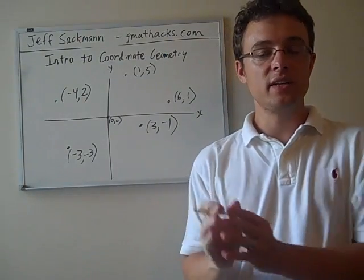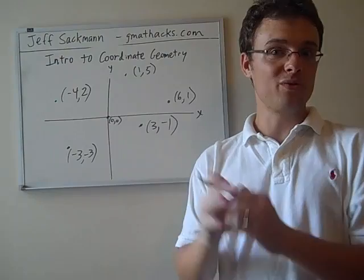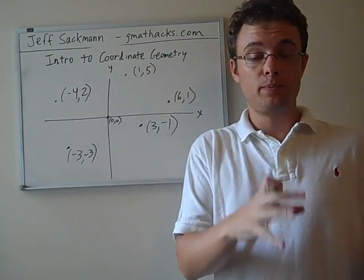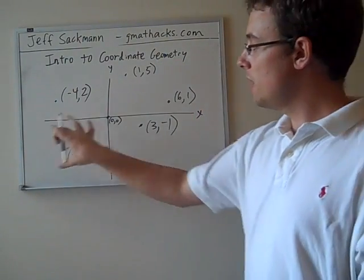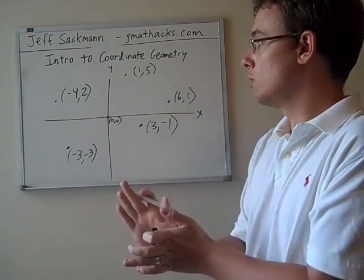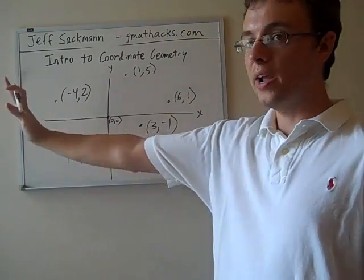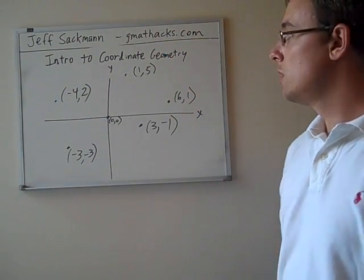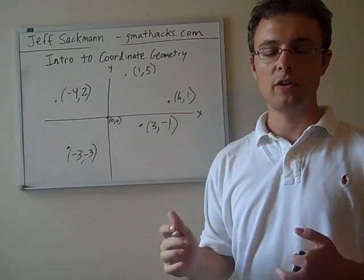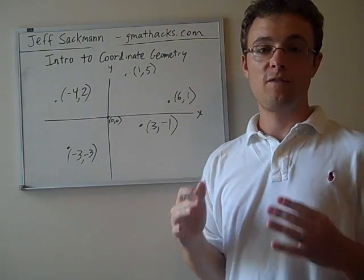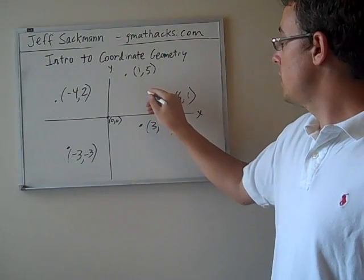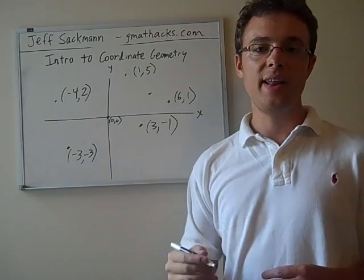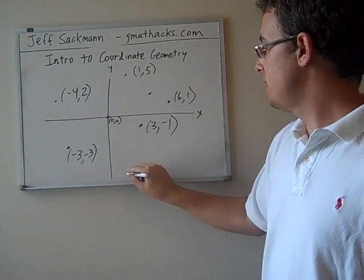The key thing to understand is that in each of these quadrants, the quadrant determines whether each coordinate is positive or negative. Up here everything's positive, down here everything's negative. It's all about the relationship to the axes — left and right of the y-axis, above or below the x-axis. So when you're plotting points, if you wanted to plot a point of (4, 2) you'd go over 4 and up 2. If you wanted to plot a point (1, negative 7), you'd go over 1 and down 7.